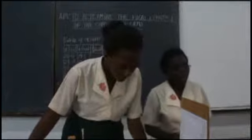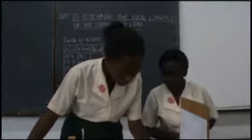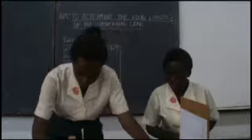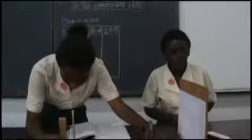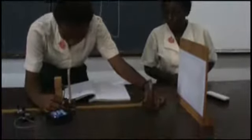We now set a distance of 35 centimeters between the lens and the wire gauze. We close the switch and get the clearest image, then measure the distance V between the screen and the lens — in this case it's 15.4 centimeters.